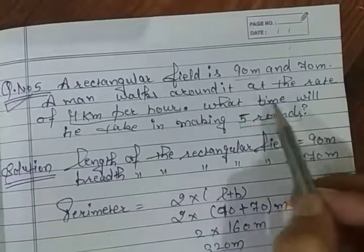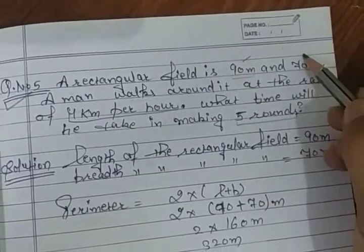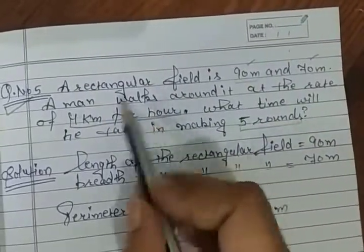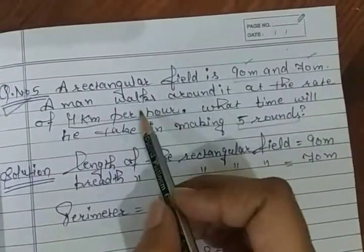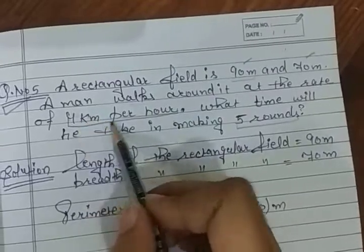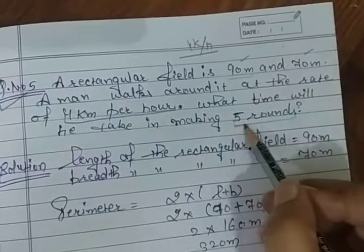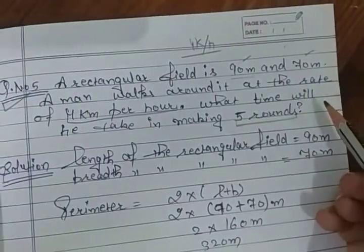How much time will he take in making 5 rounds? Firstly you have a rectangular field with its length and breadth. You are told that a man walks around it at 4 km per hour speed, and if he takes 5 rounds, how much time will he take?